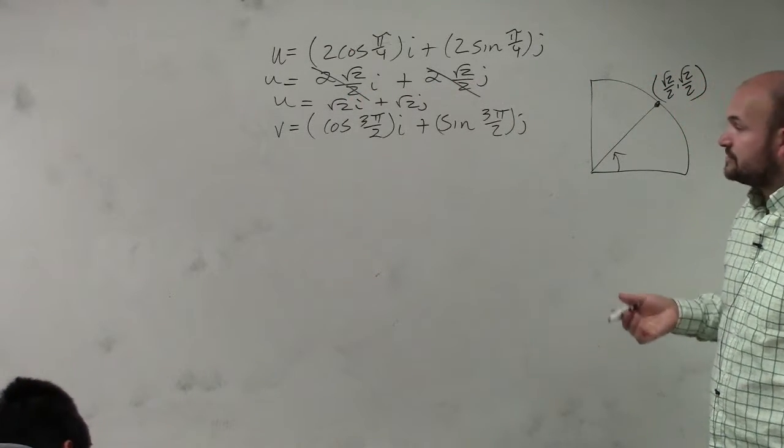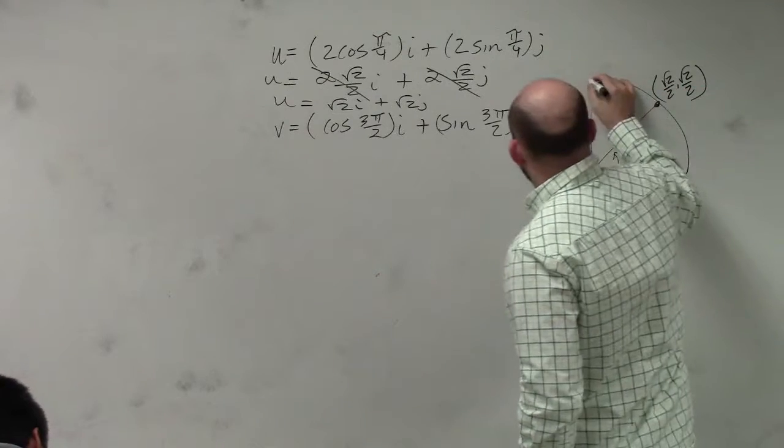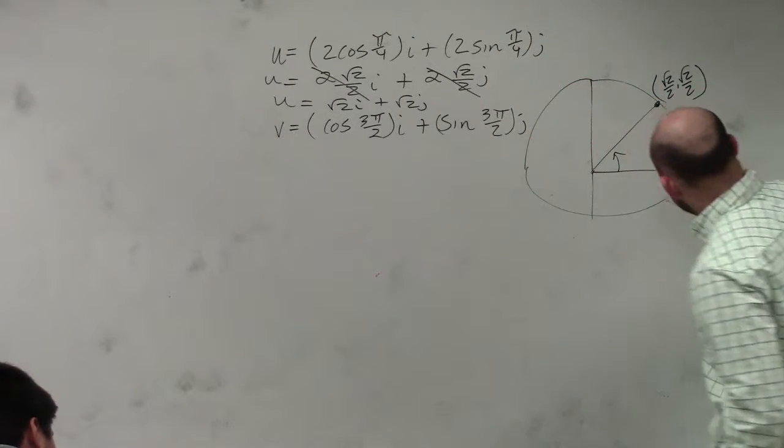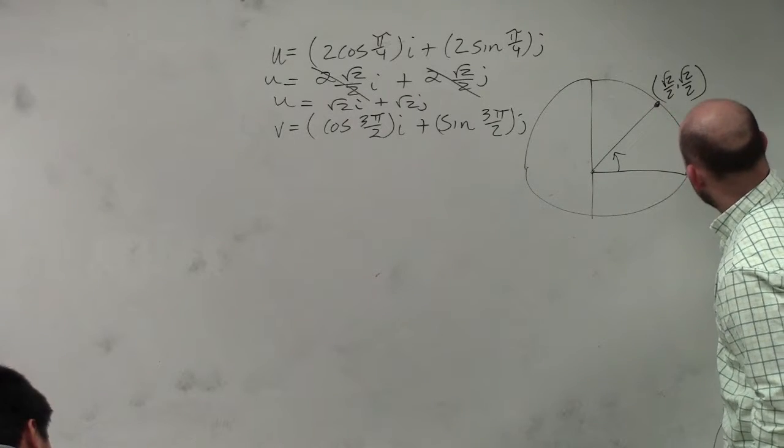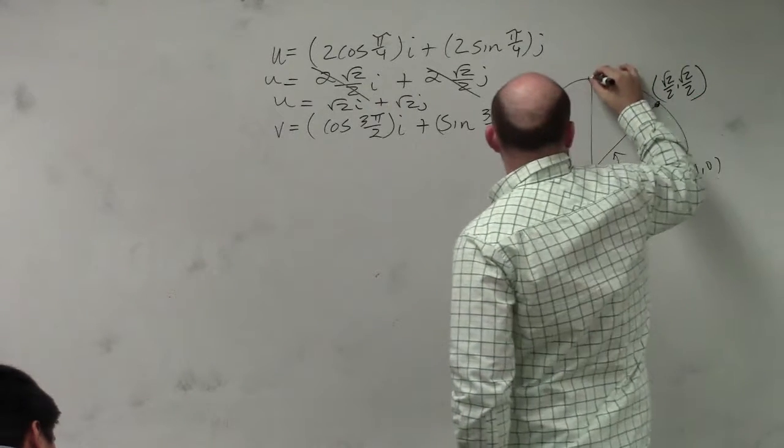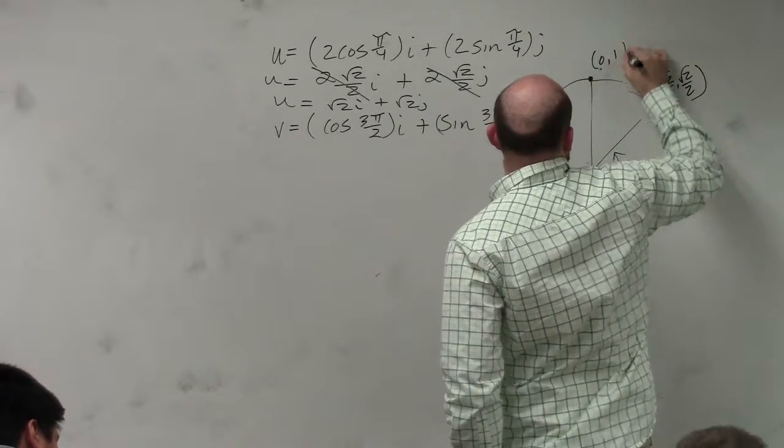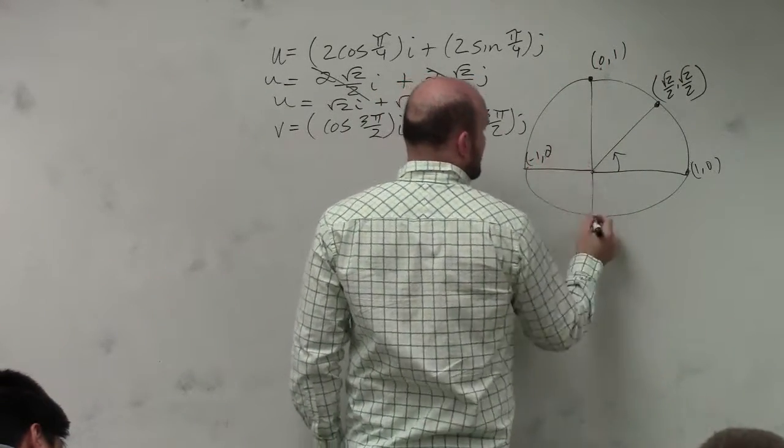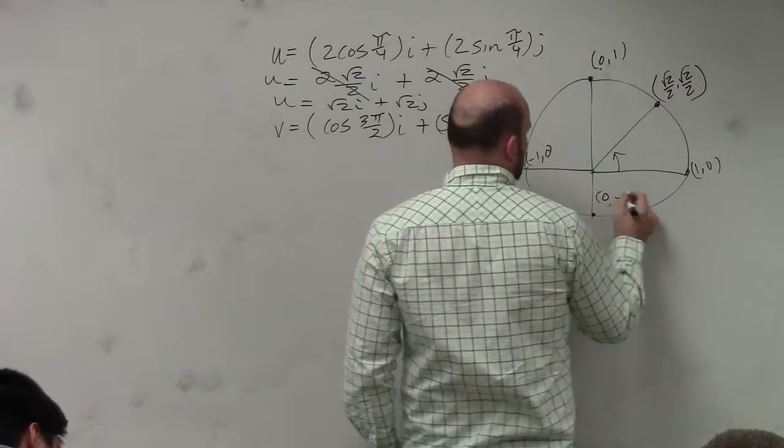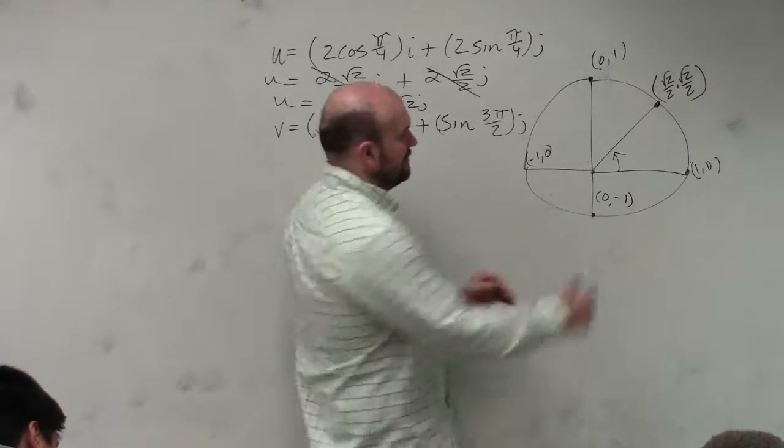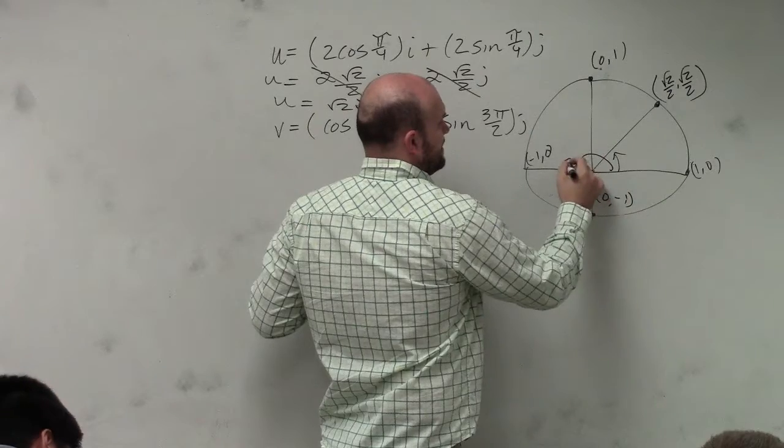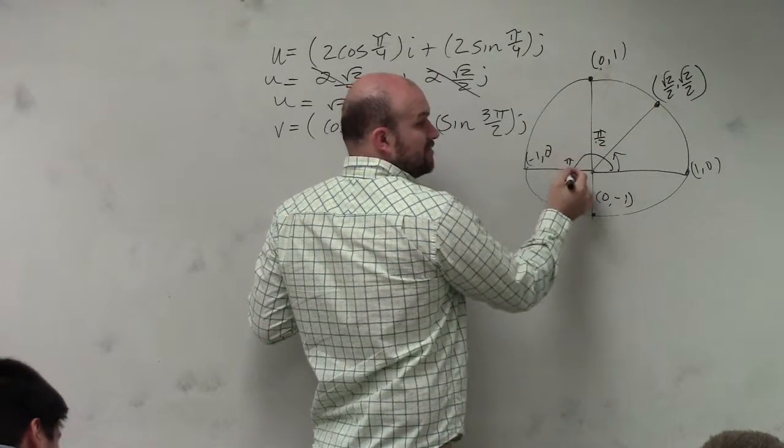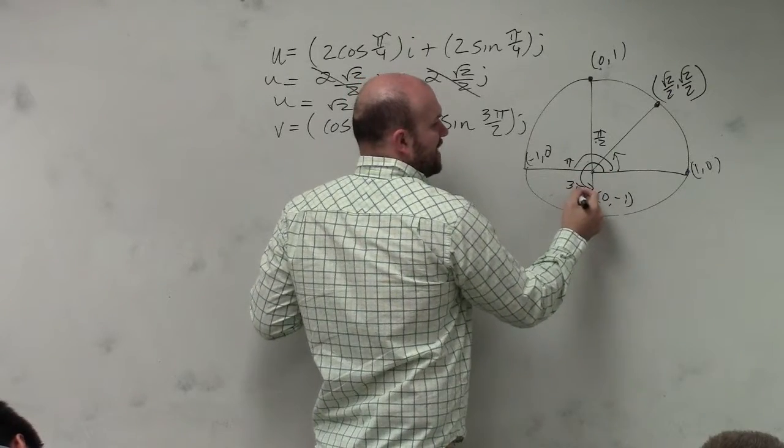The next one is 3 pi over 2. Well, if I continue this kind of unit circle here, if this point is 1, comma, 0, and this point is 0, comma, 1, that means this point is negative 1, comma, 0, and this point is 0, comma, negative 1. So if halfway around a circle is pi, that means that's pi halves. So half of pi, 2 halves of pi, 3 halves of pi.